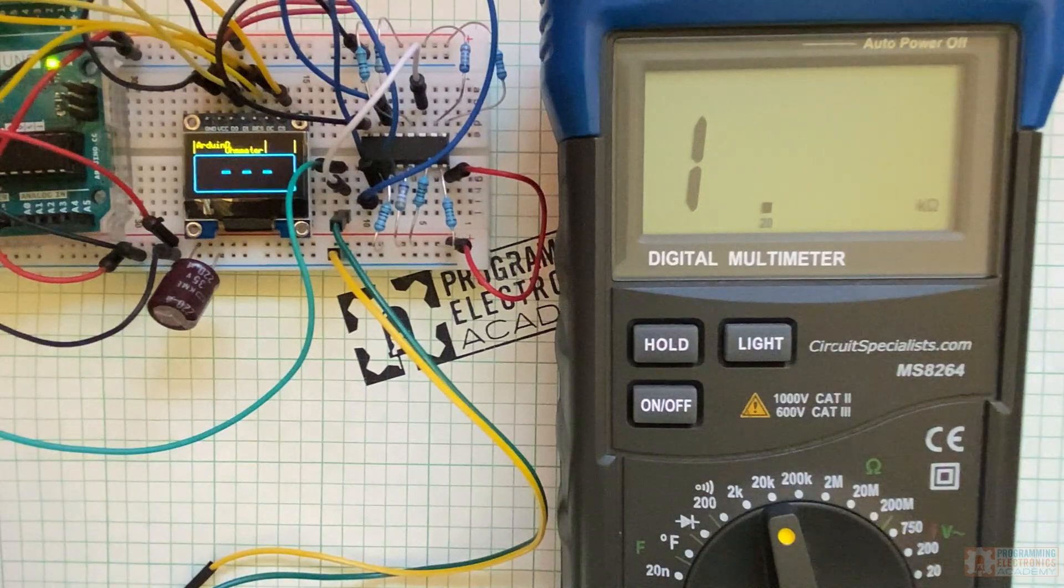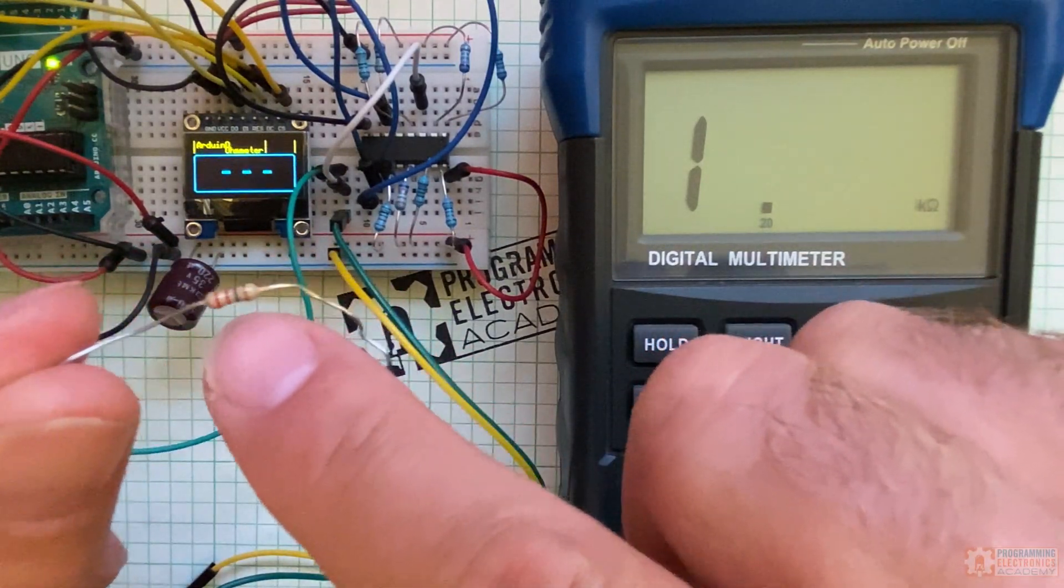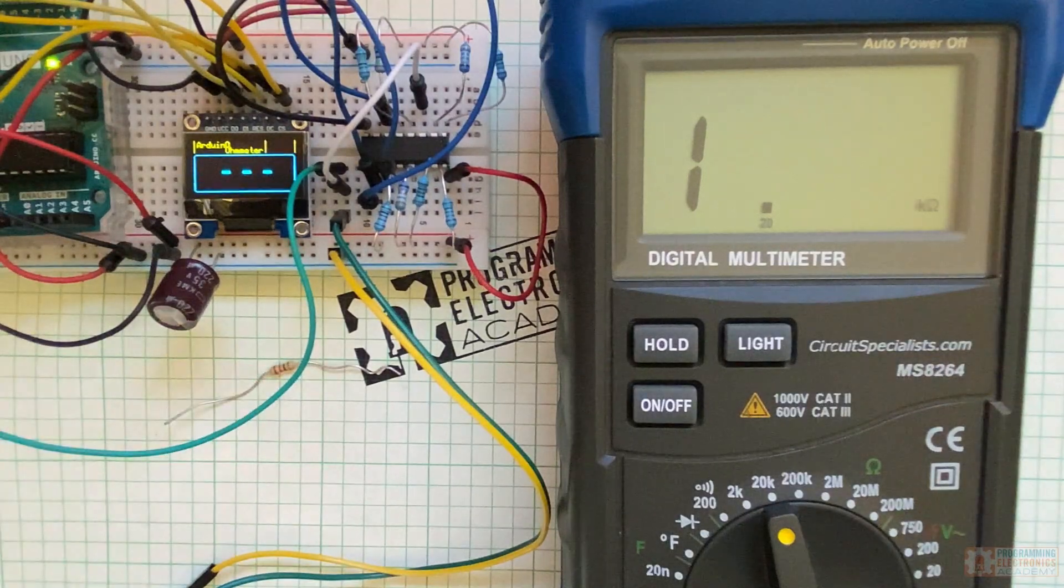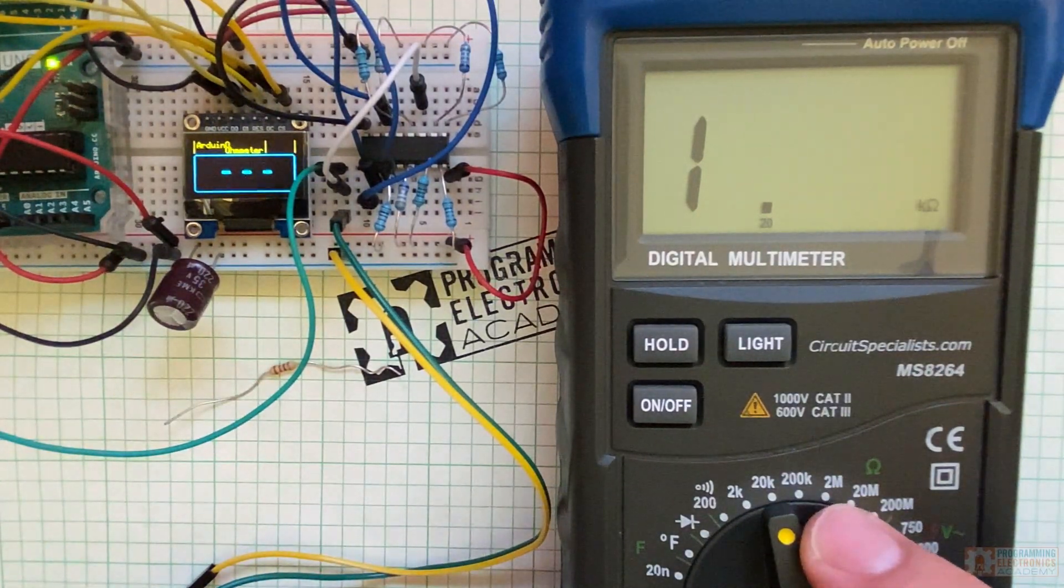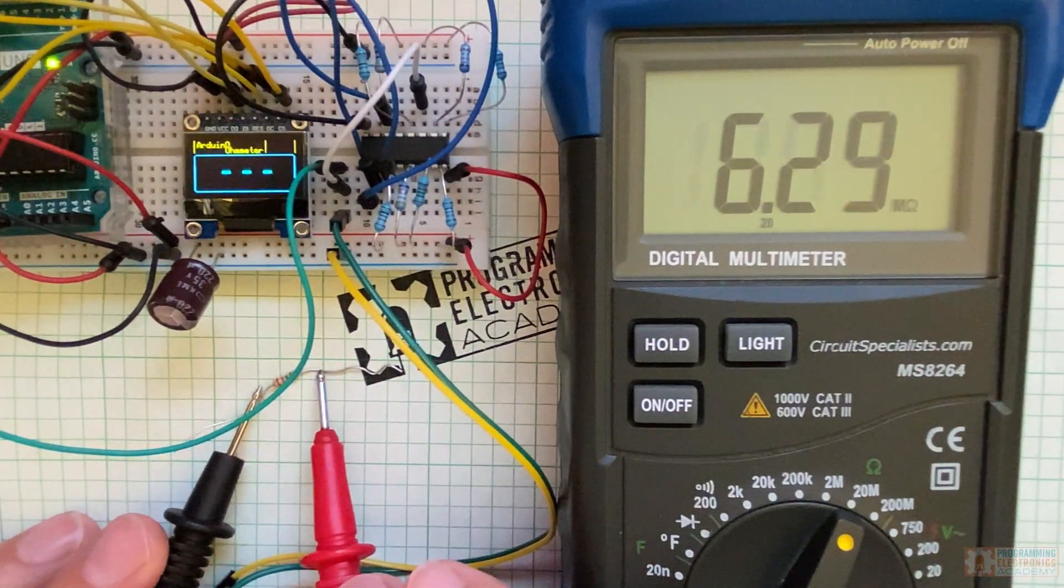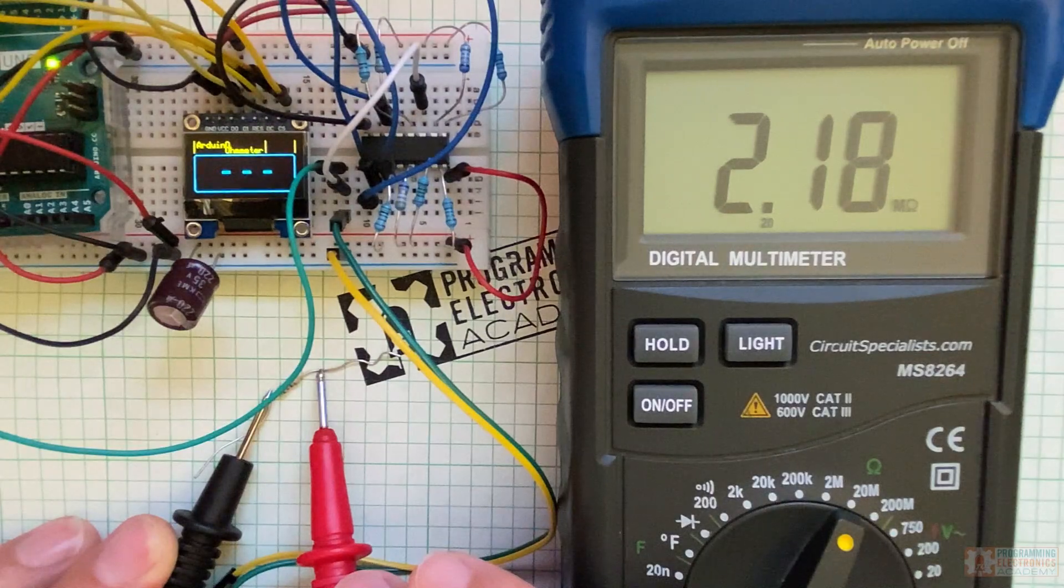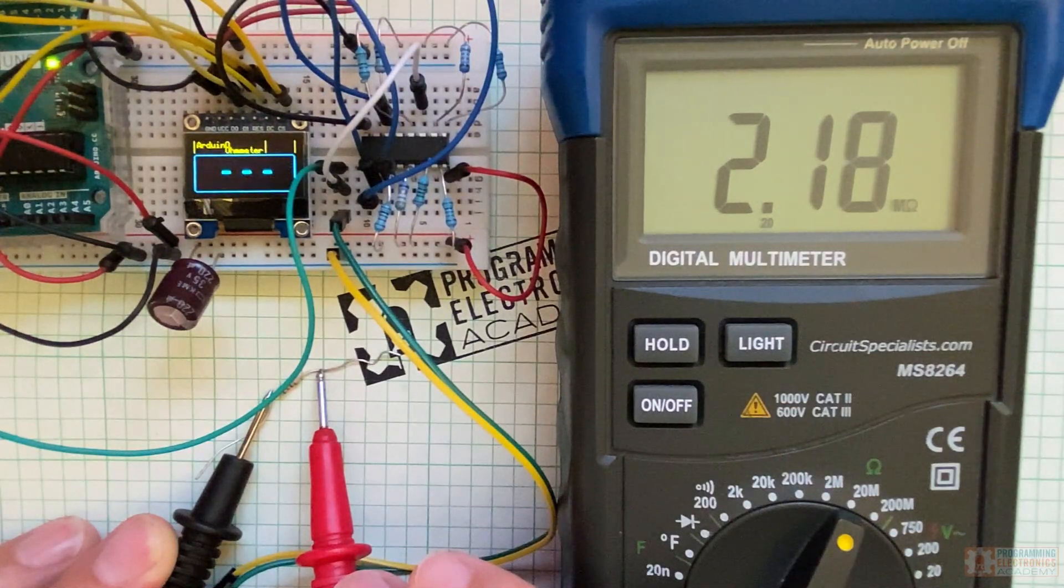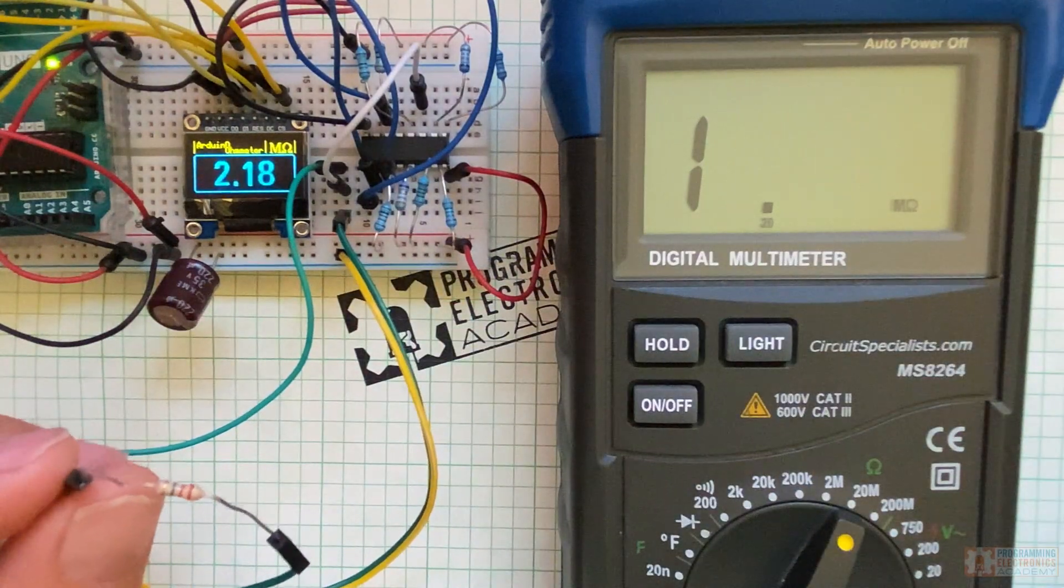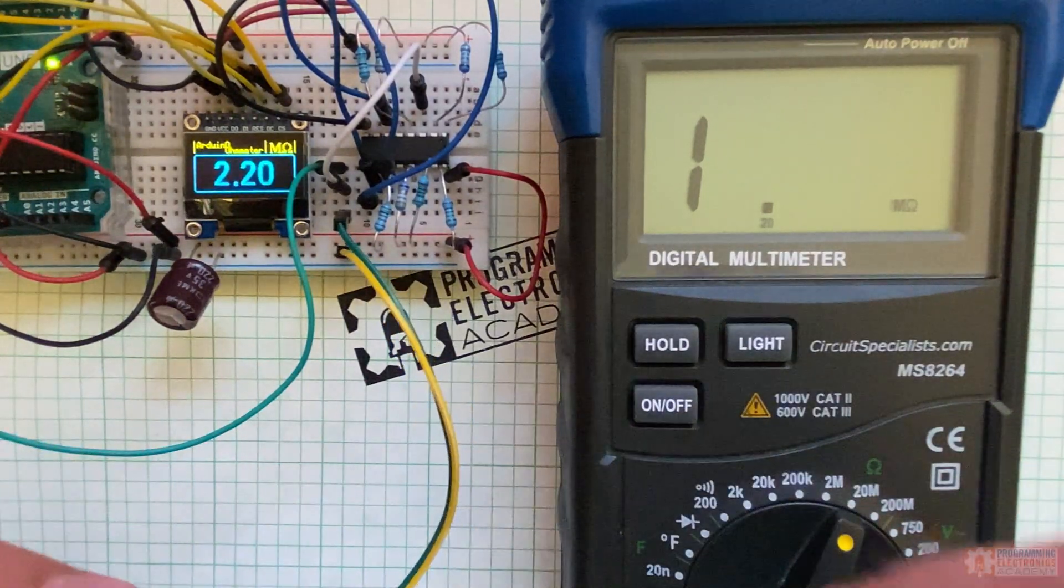Let's try a 2.2 mega ohm. So this is 2.2 mega ohm. I got to go all the way up to 20 mega ohm right here. And let's see what we get. 2.19 mega ohm. We're getting a little kind of jumped around a little bit. Let's see what Arduino meter says. Look at that. 2.1. 2.2 mega ohms. That's pretty cool. I got to say I'm pretty impressed.